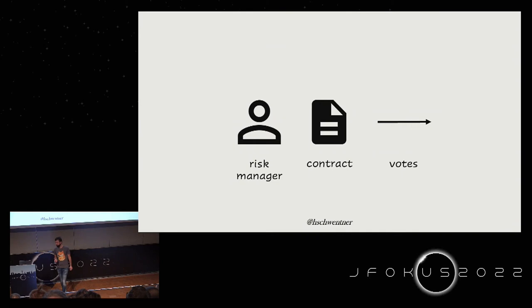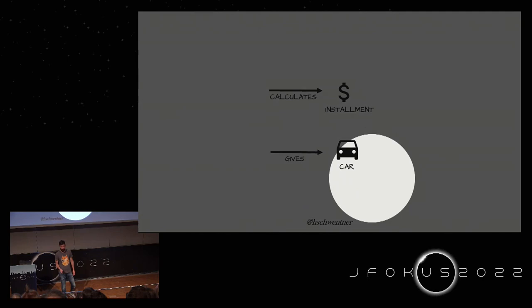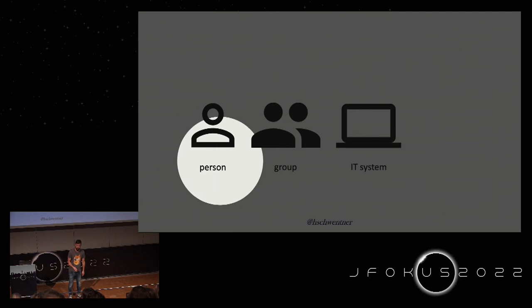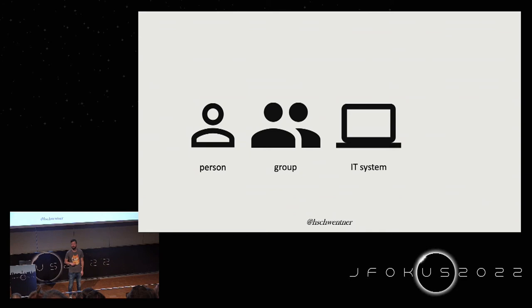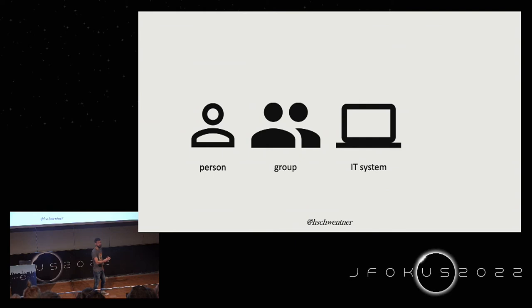We can vary the icons for different work objects — the installment gets a dollar sign, the car gets a car icon. It's a good idea to have not too few and not too many different icons in one story. Similarly for actors — typically a person icon, sometimes with a hat or a tie. Groups can be actors, and even IT systems can be actors in a domain story.